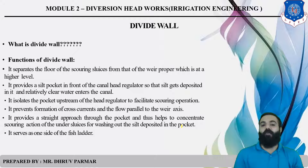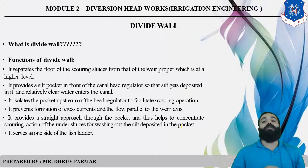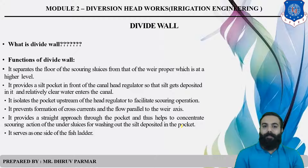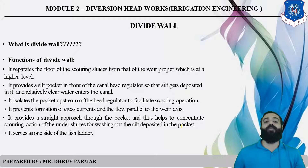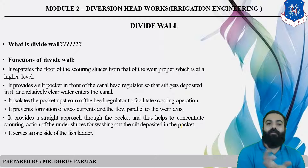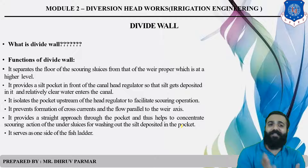Furthermore, the Divide Wall prevents formation of cross currents and flow parallel to the weir axis. Cross currents are frequently produced on the upstream side, and due to the Divide Wall we can mitigate and reduce the cross current energy. It provides a straight approach to the pocket and concentrates action on the undersluices for washing out silt deposited in the pocket. It also supports one side of the fish ladder. These are the basic functions of the Divide Wall.